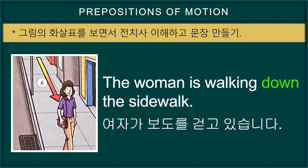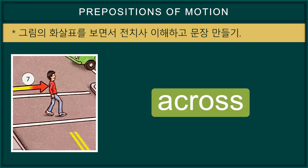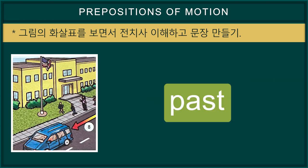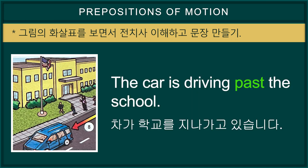Down — the woman is walking down the sidewalk. Across — the man is walking across the road at the crosswalk. Past — the car is driving past the school.